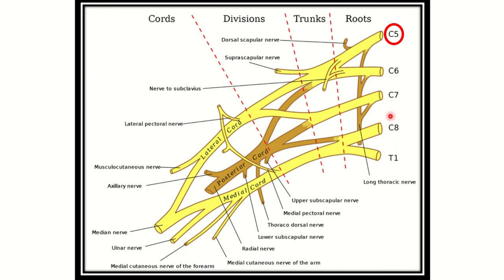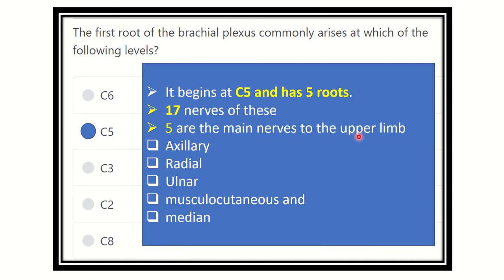For this question, the answer is cervical 5. The past root is cervical 5. In details about the brachial plexus: these points are very important for exams — it begins from the cervical 5 root, and it has 5 roots.